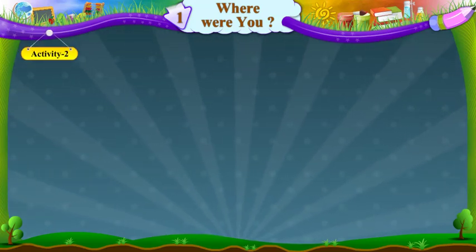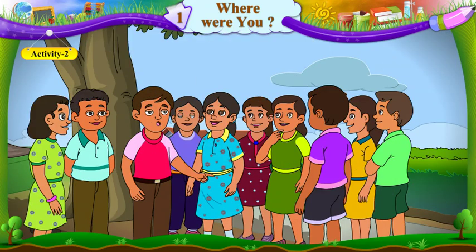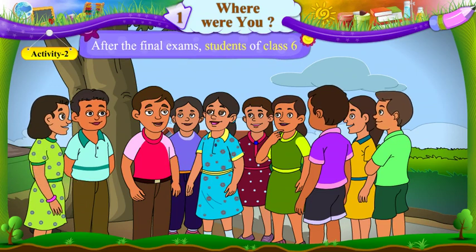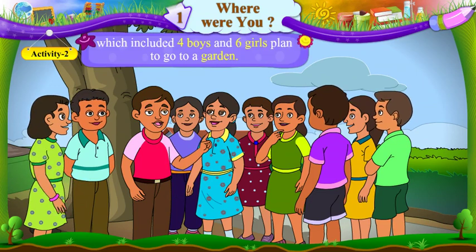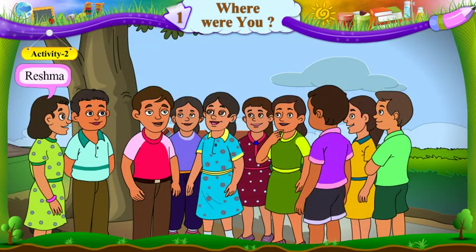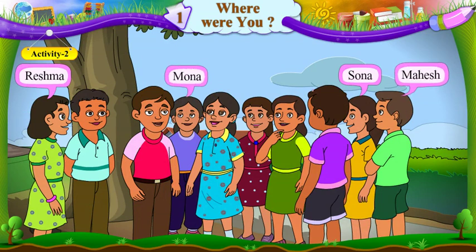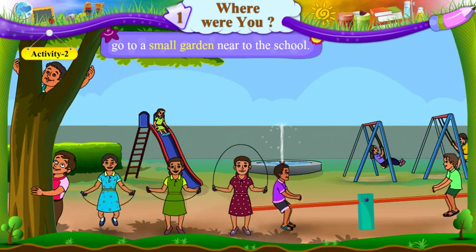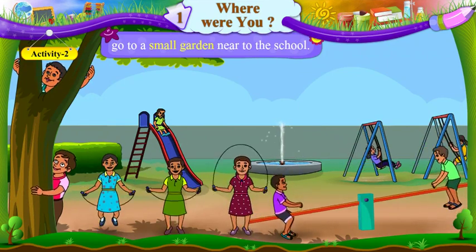After the final exams, students of Class 6, which included 4 boys and 6 girls, plan to go to a garden. Reshma, Sona, Mona, Mahesh, Irfan, Geeta, Eva, Sunita, Sanjay and Jai go to a small garden near to the school.